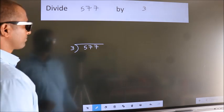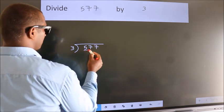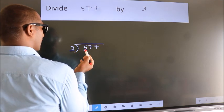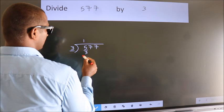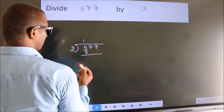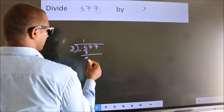Next. Here we have 5, here 3. A number close to 5 in 3 table is 3 ones 3. Now, we should subtract. We get 2.